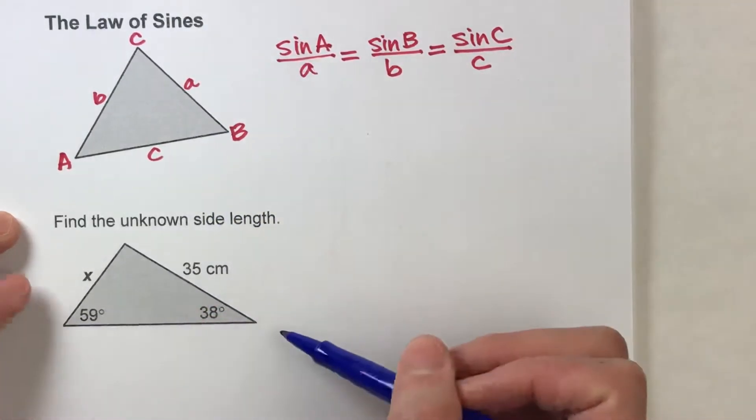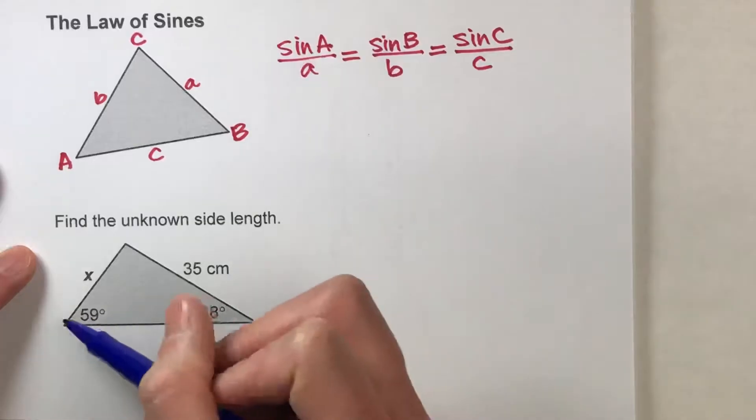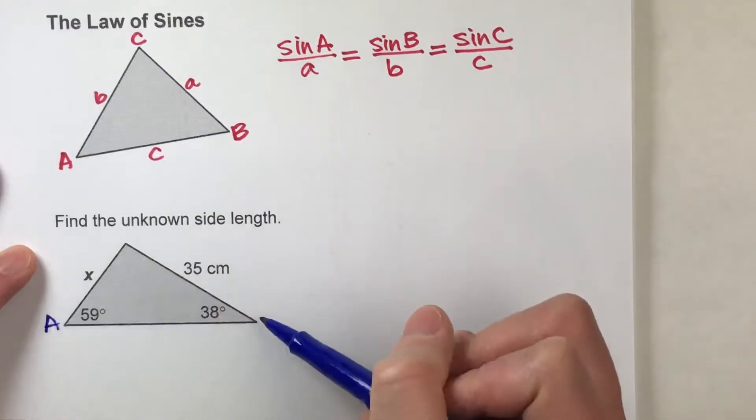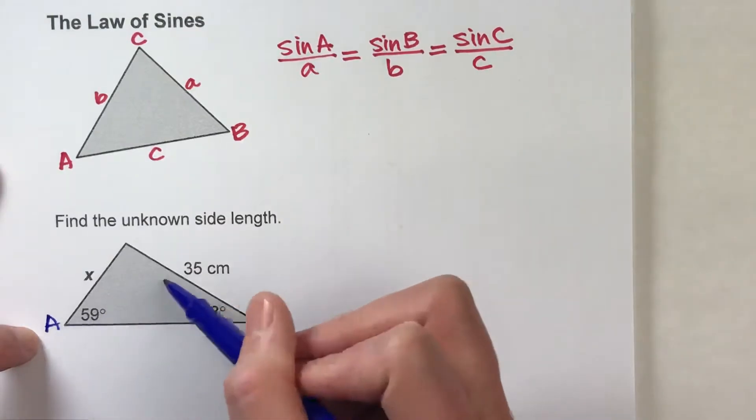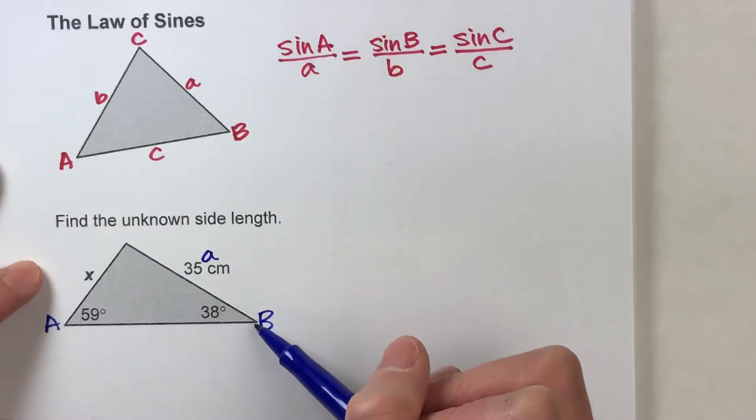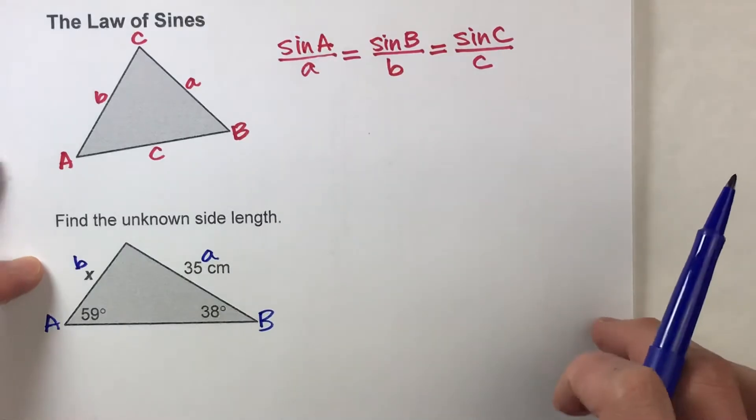The first thing I like to do is label things that I've given. So I'm given these two angles. So I'm going to label these two angles A and B. And the side across from angle A is going to be little a. Side across from angle B is going to be little b.